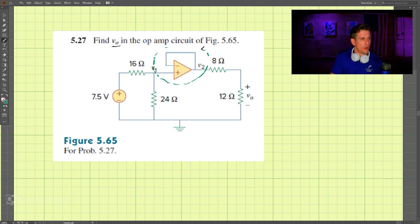We have v1 and v2, and since we know v1 must equal the input here, this part up here we call a voltage follower.